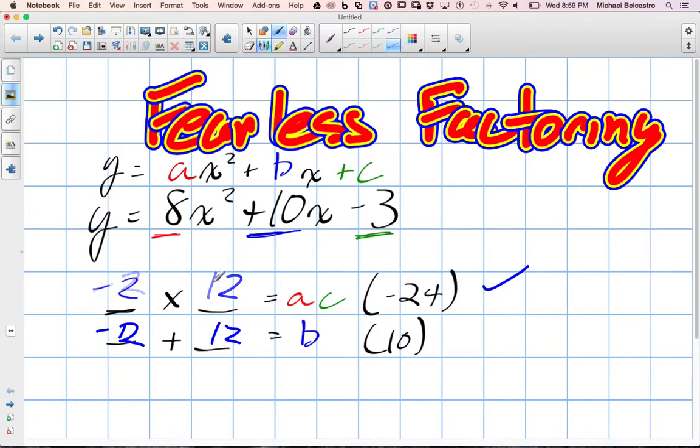Those are going to be our values. Negative 2 and 12. So we know those are our numbers. I'm going to write them on the side. Negative 2 and positive 12. Those are important to us.